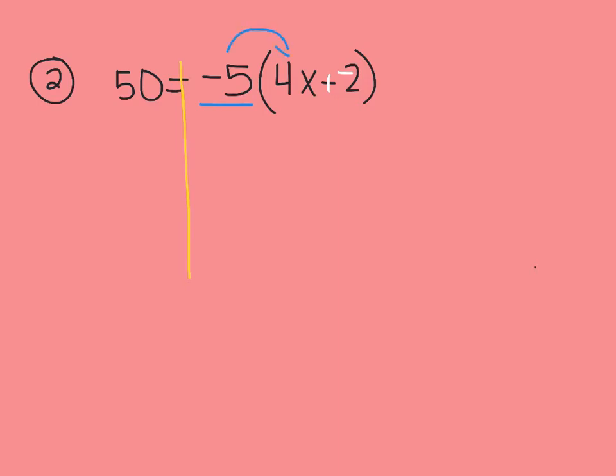We have negative 5 times 4x, and that's going to give us negative 20x. Then I bring down my plus sign because I'm adding. Then I have negative 5 times negative 2. Negative times a negative is a positive, so we get plus 10 over there. And on the left hand side, just drop down your 50. Don't forget that equal sign—we're going to bring that down each time we rewrite our new equation.